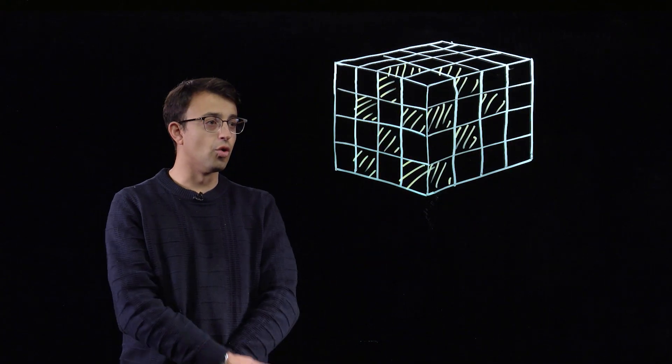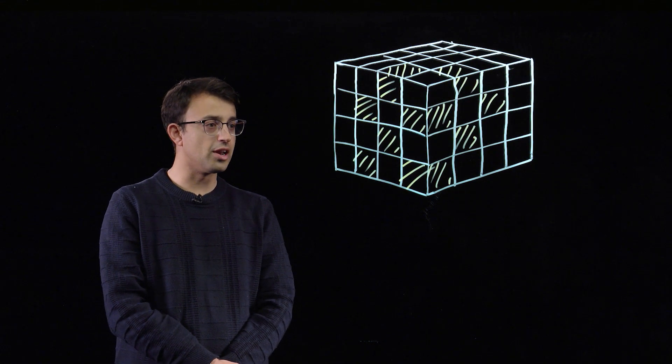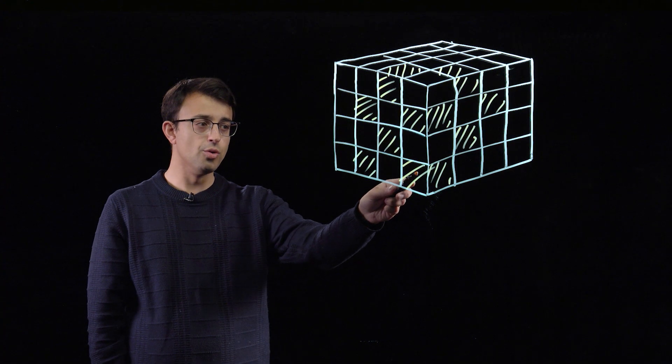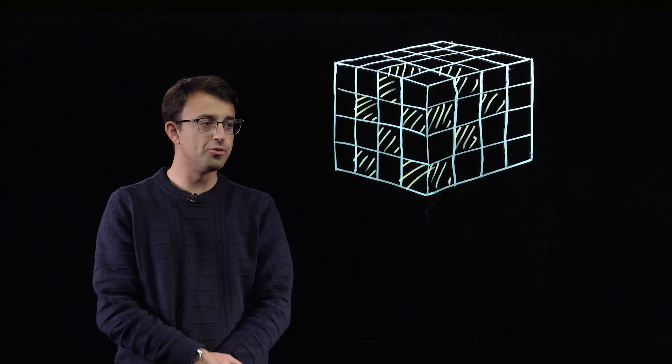I'm not going to colour all of them because I think the point is clear. Now what does this show? This shows that there are no neighbouring pairs of cubes that are both white.